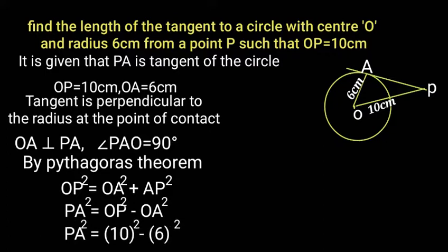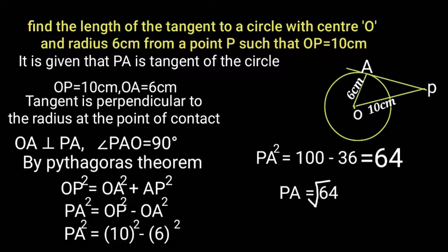PA square is equal to 10 square minus 6 square, which equals 100 minus 36, which is 64. PA equals root 64, and PA equals 8 cm.